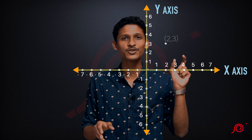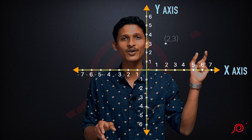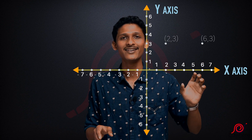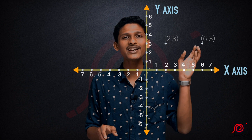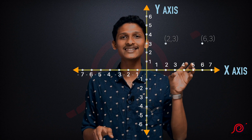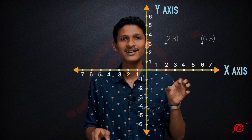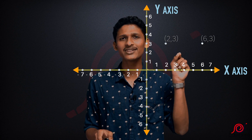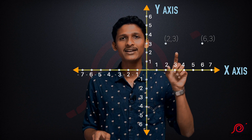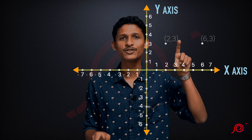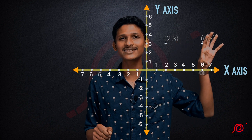So what we have done here is, we have two points. One point is (2,3), and another point is (6,3). We are going to find the distance between these two points. Let's take a look at this figure. One point is (2,3) and another point is (6,3).